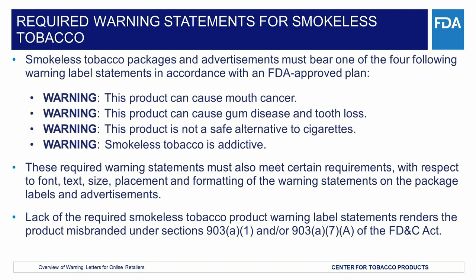These required warning statements must also meet certain requirements with respect to font, text size, placement, and formatting on the package labels and advertisements. Each warning statement must be located on the two principal display panels of the package, and each label statement shall comprise at least 30% of each such display panel, in 17-point conspicuous and legible type, and in black text on a white background or white text on a black background in a manner that contrasts by typography, layout, or color with all other printed material on the package in an alternating fashion under the warning plan, except that if the text would occupy more than 70% of the area specified, such text may appear in a smaller type size, so long as at least 60% of such warning area is occupied by the label statement.